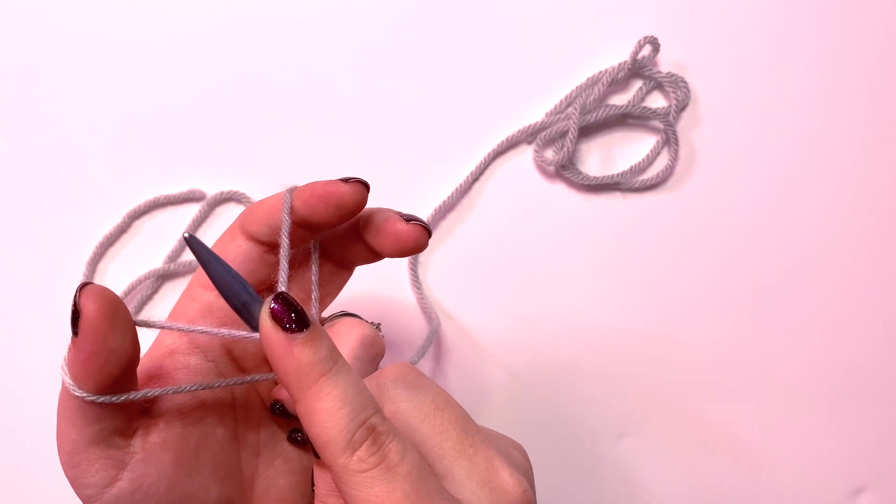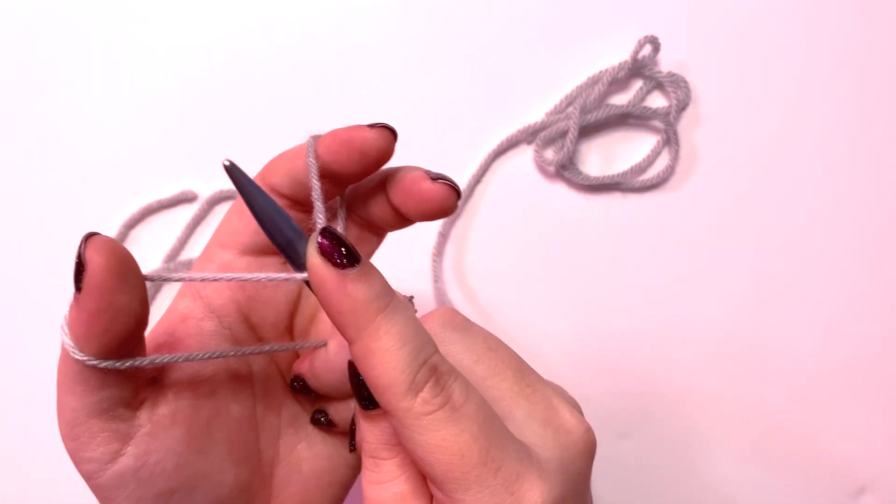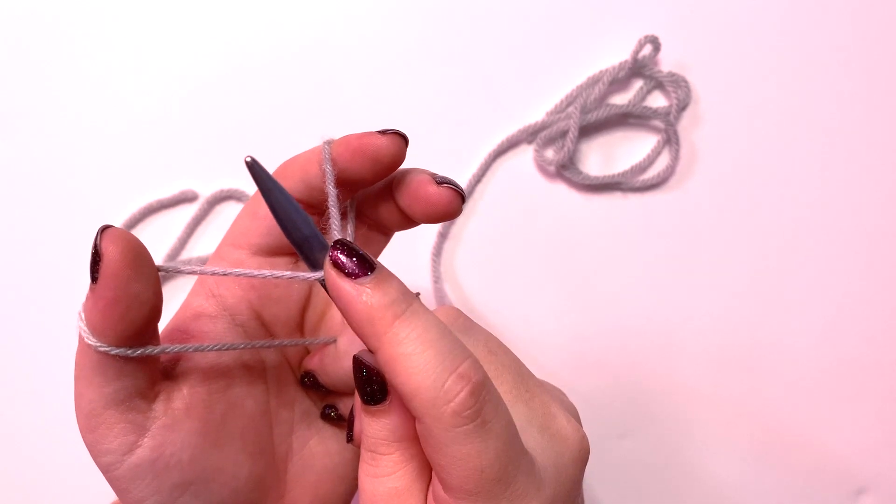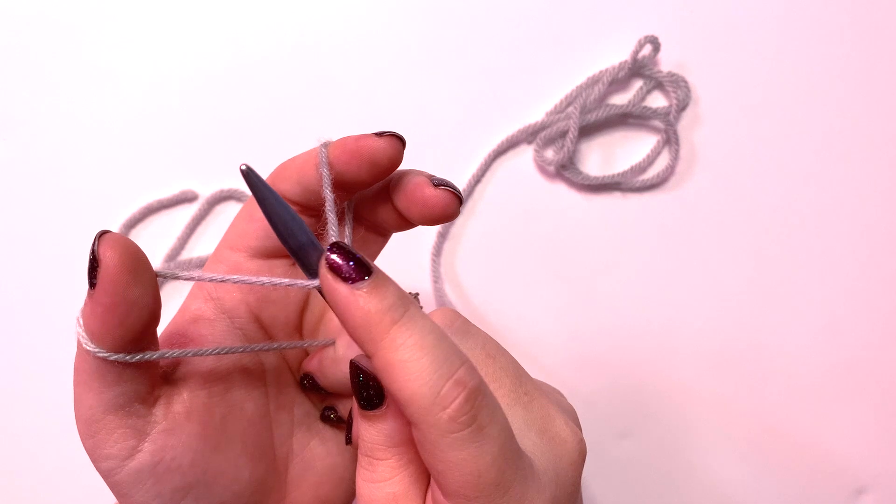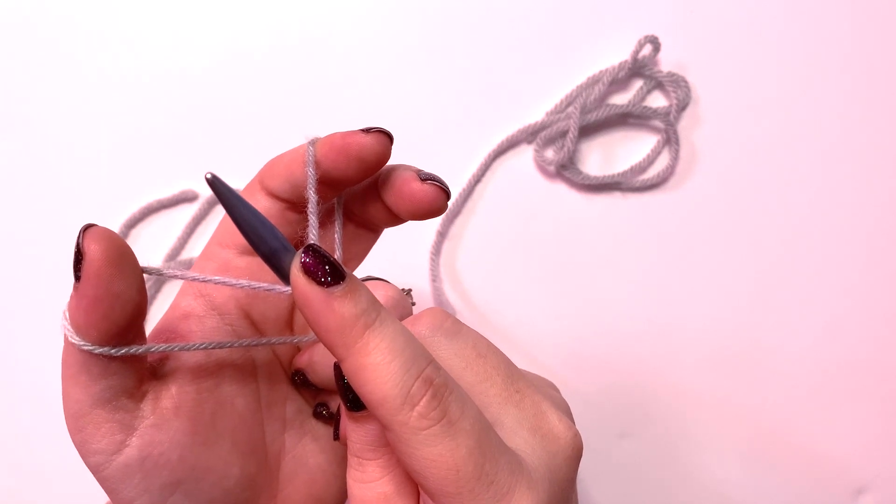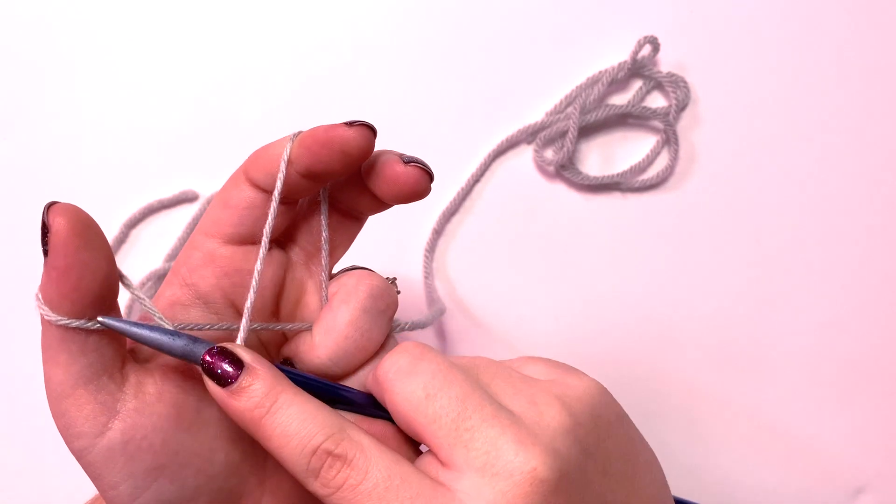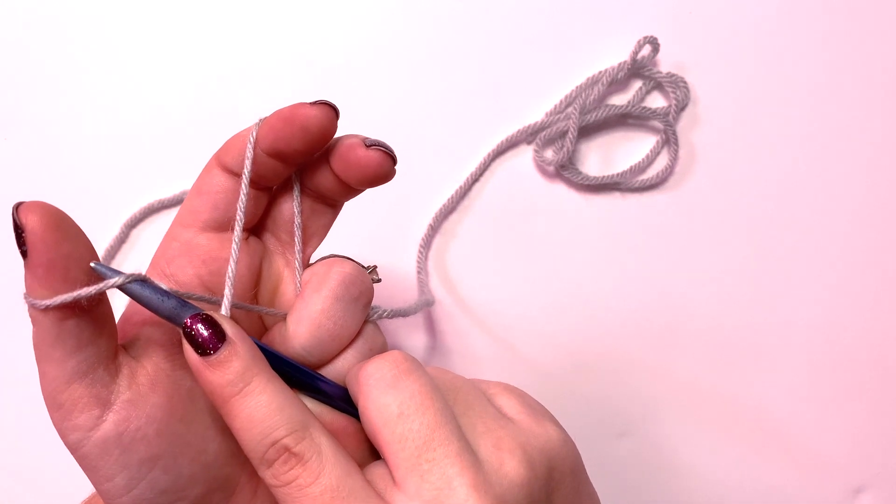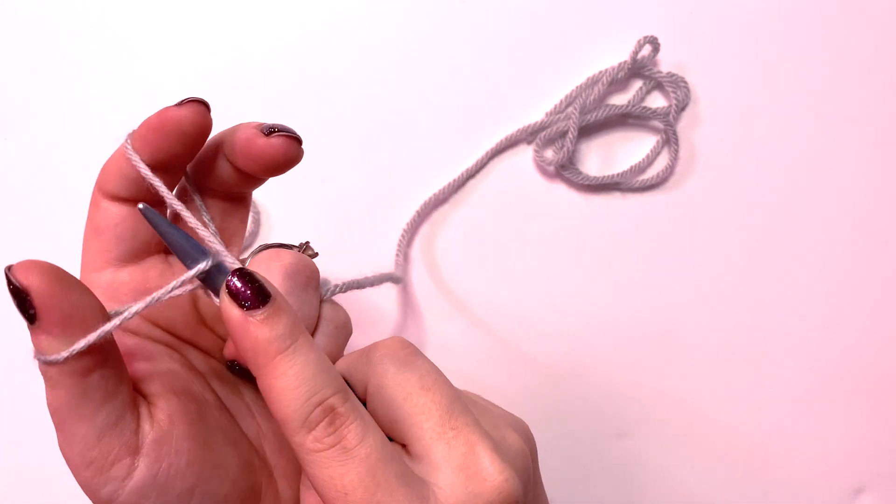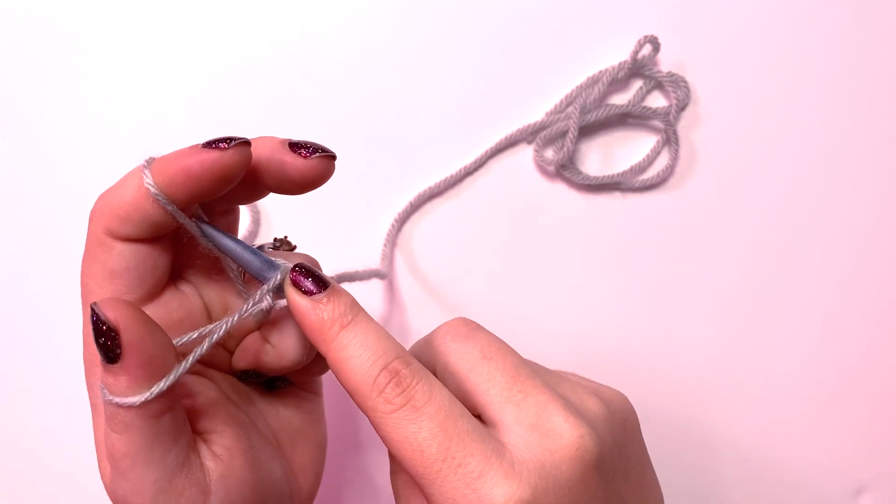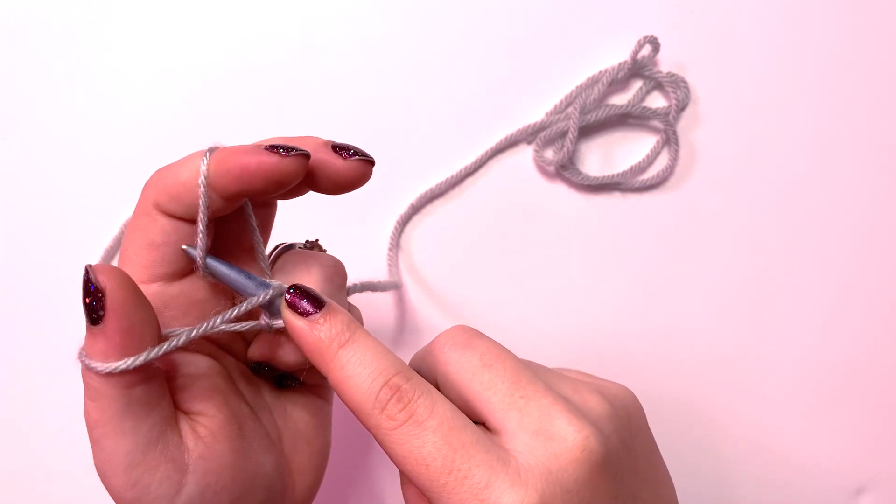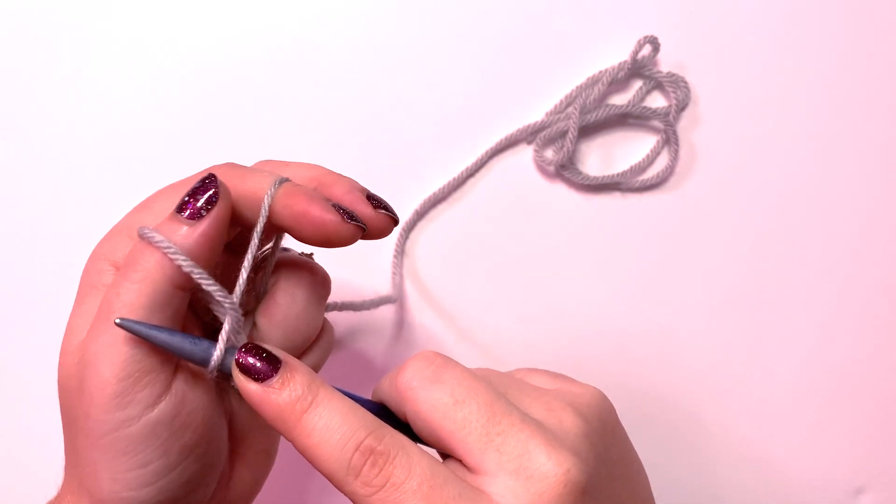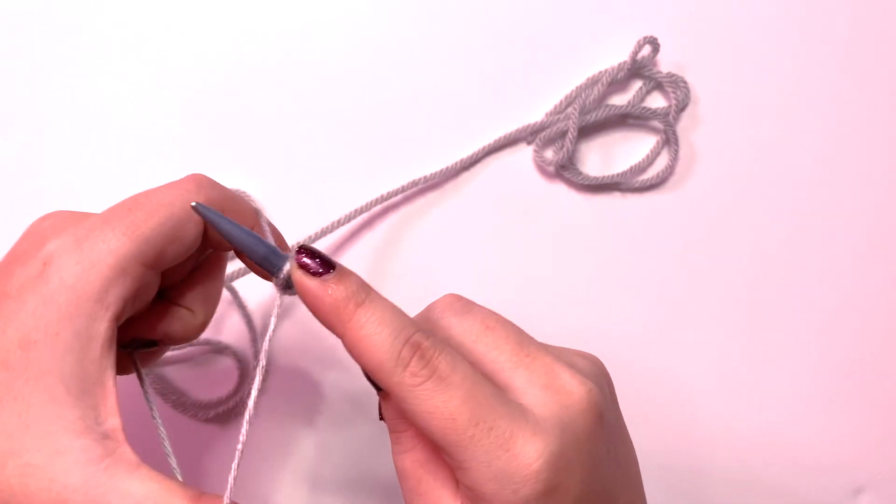For the long tail cast on, we're going to take our needle. I'm holding where my knot would be because I don't want it to slide off. I'm going to go under what's in front of my thumb and between the two, pull that over. Go under this one that's on my pointer and then back through the loop, and then tighten it up. Now I've cast on two stitches.